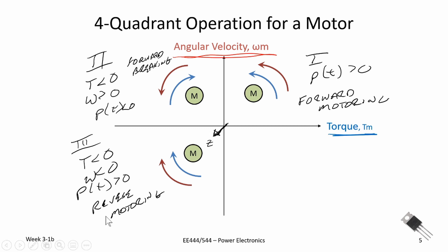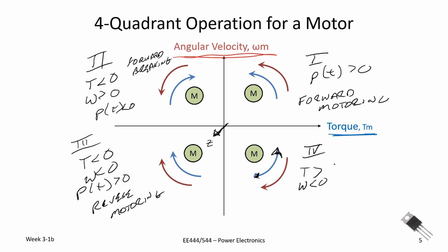Finally in the fourth quadrant, our torque is positive and our angular velocity is negative — let me fix the arrow on the torque there. In quadrant four, torque is positive, angular velocity is negative, and our instantaneous power is also negative. This is called reverse braking. In this quadrant the motor is providing energy back to the system; if we are braking we could do regenerative braking to recapture that energy, or we lose it as heat through resistive braking. Those are the four quadrants of operation for a motor.